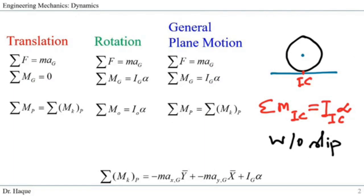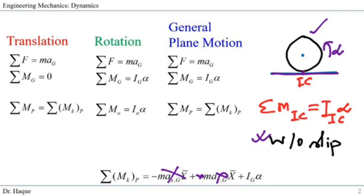One last point: if we have a circular-shaped body or a uniform disc rolling on a rough surface without slip, we can take the moment about the instantaneous center of zero velocity, IC. If we take the moment about IC, it equals I_IC·alpha — the moment of inertia about point IC multiplied by the angular acceleration — since there is no slip, we will not have the translating components. We will only have I_IC·alpha.